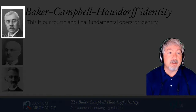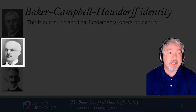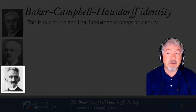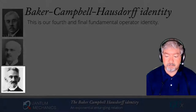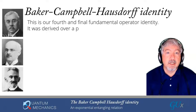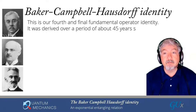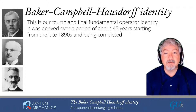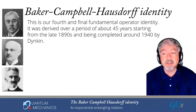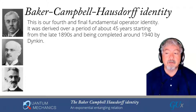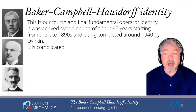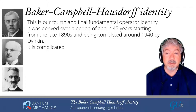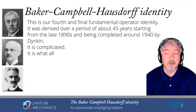On the left-hand side, you can see Baker on the top, Campbell in the middle, and Hausdorff at the bottom. This identity was derived over a period of about 45 years, starting around 1895 or so, and it was completed around 1940 by a Russian named Dynkin. Needless to say, anything that takes that long to derive is going to be hard to work out.